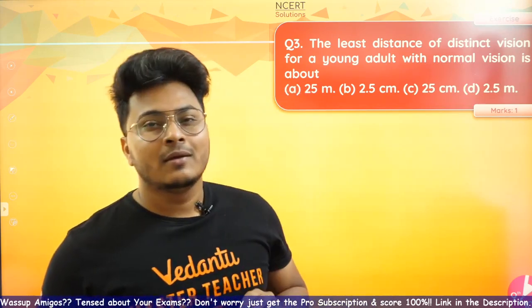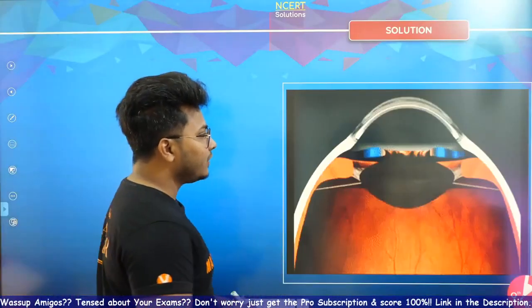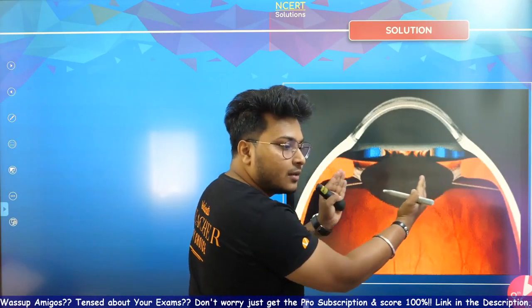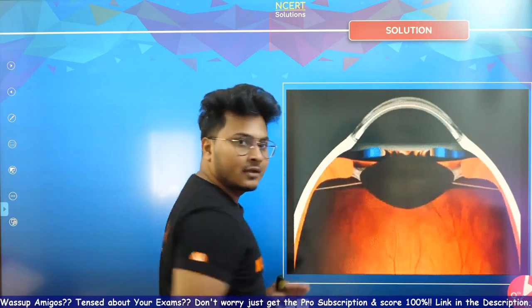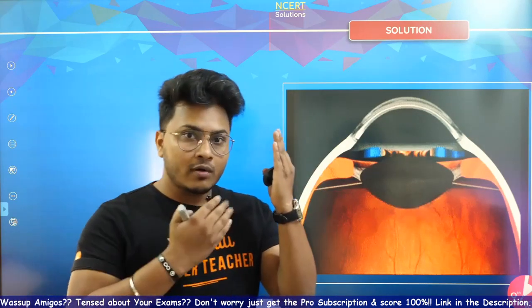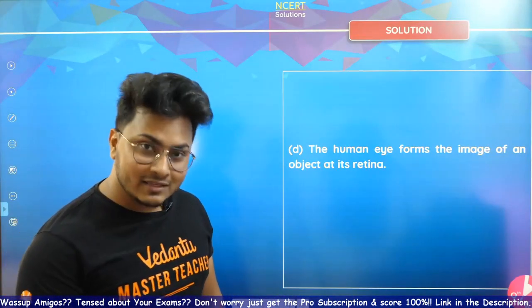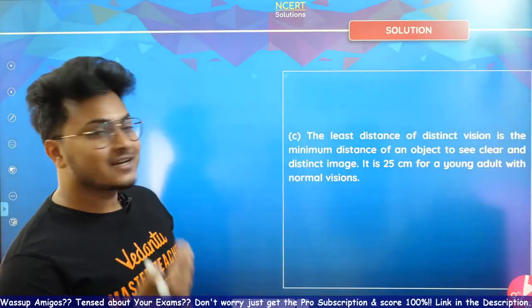If you place an object at 5 centimeters and look at it carefully for 10–15 seconds, you will feel a little pain in your eyes. This is because when you look at nearby objects, ciliary muscles contract and press on your eye, and 25 centimeters is the limit of contraction. Below that distance the lens gets compressed, causing strain. So 25 centimeters is the distance at which you can see things clearly without any strain on your eyes.